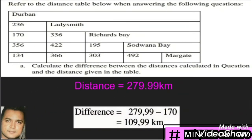All that is required here is the difference between the two distances. We have 279.99 kilometers, which we worked out, minus the 170 kilometers from the table, giving us a difference of 109.99 kilometers.